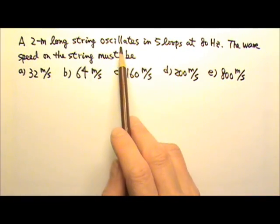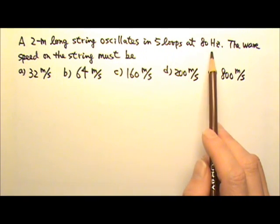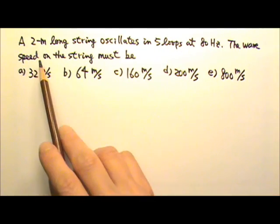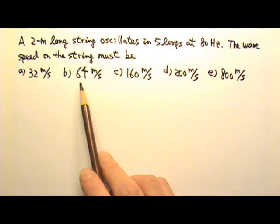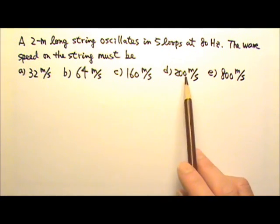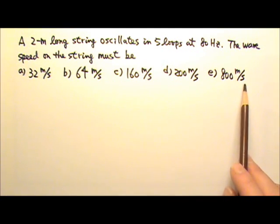A two meter long string oscillates in five loops at 80 hertz. The wave speed on the string must be 32 meters per second, 64, 160, 200 or 800 meters per second.